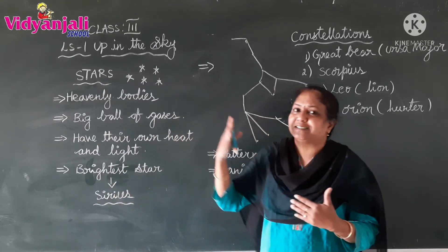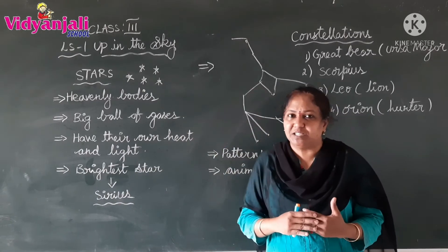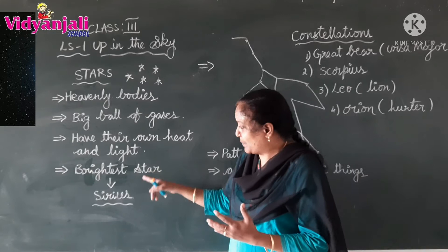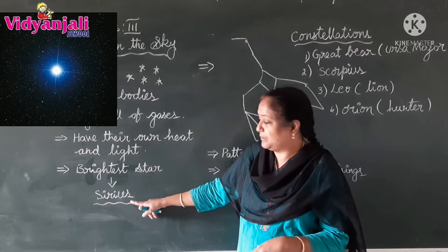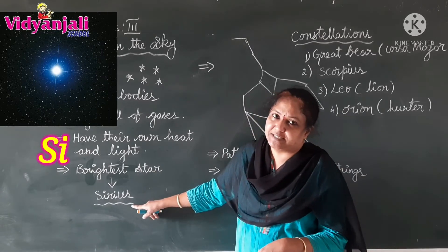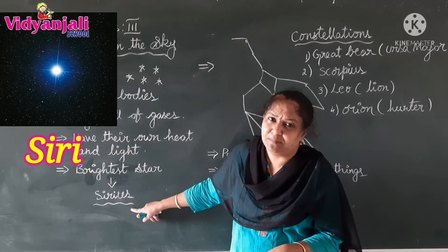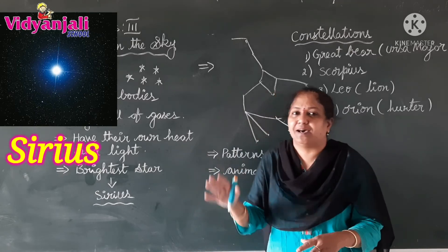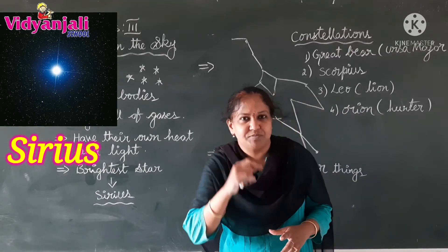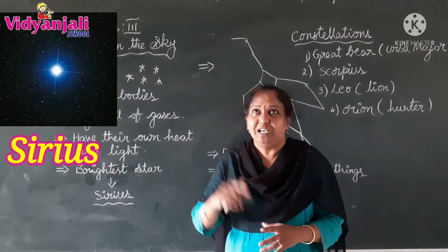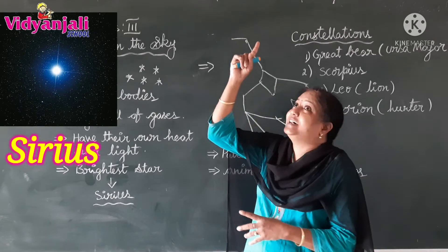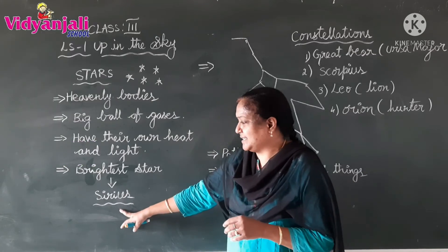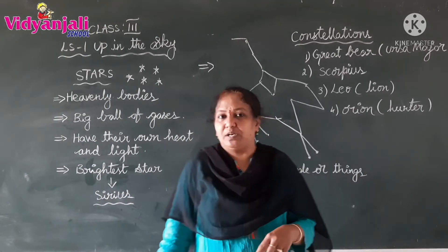If you watch the night sky clearly, you can see the brightest star. What is that star's name? Sirius. Sirius is the brightest star in the night sky. If you observe the night sky you can see clearly the brightest star, which is Sirius.